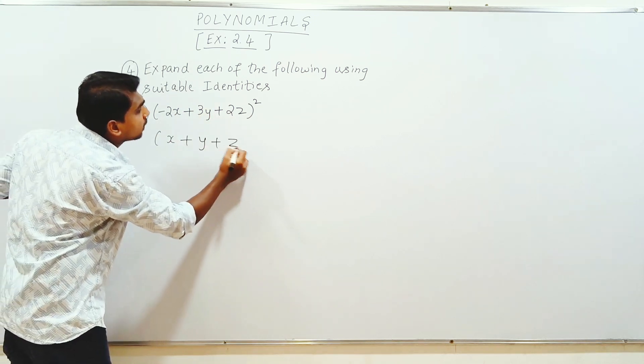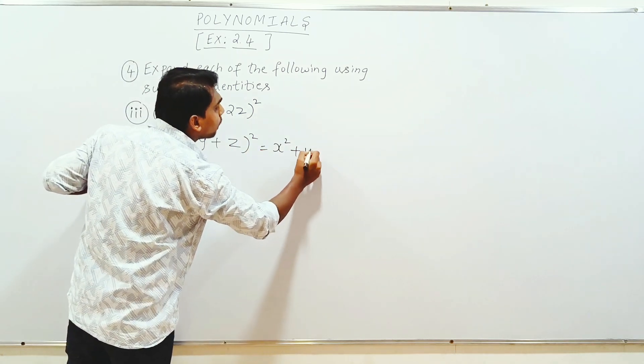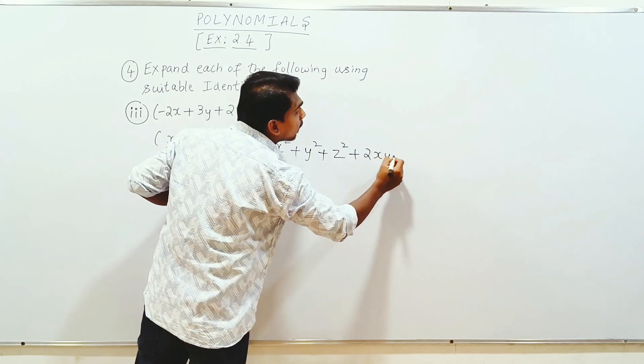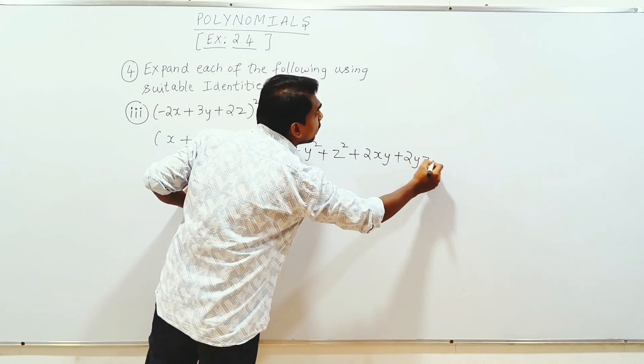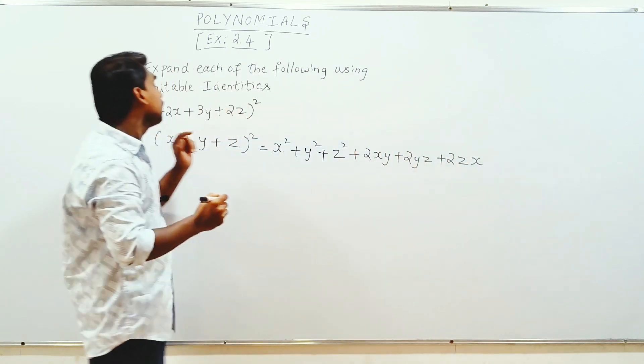x plus y plus z whole square is equal to x square plus y square plus z square plus 2xy plus 2yz plus 2zx. This is the formula.